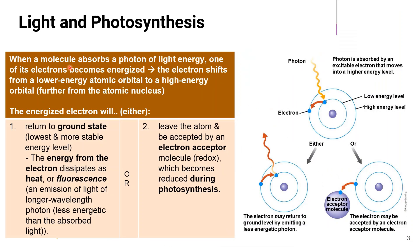When a molecule absorbs a photon of light energy, one of its electrons becomes energized, which means the electron shifts from a lower energy atomic orbital to a higher energy orbital further away from the atomic nucleus. This is represented in this figure: when a photon strikes the atom, the electron becomes energized.